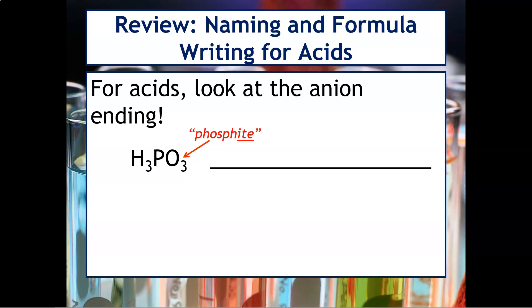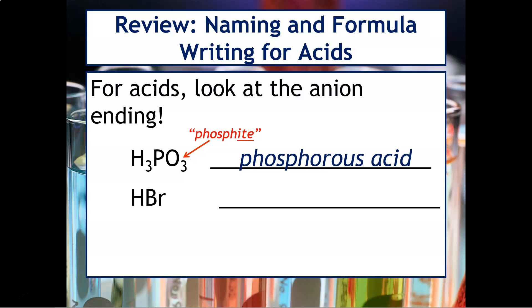Remember, "-ite" changes to "-ous" — you can remember this by thinking of words like bronchitis or gingivitis. So in this case, this should be phosphorous acid: "-ite" changes to "-ous". Here's another one: Br is called bromide. Remember, "-ide" changes to hydro-blank-ic acid, so this would be hydrobromic acid. Just do the best that you can with the spelling.